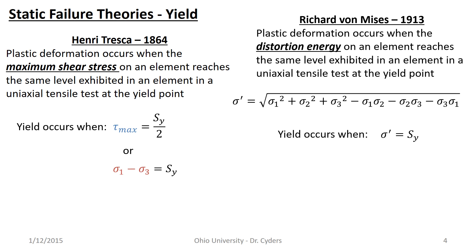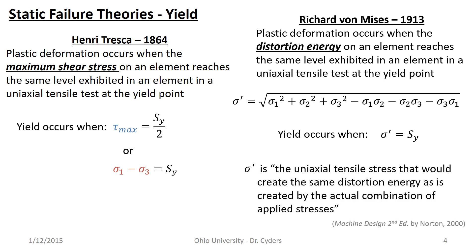And von Mises said that yield occurs when this sigma prime is equal to or greater than the yield point from my tensile test. Again, good for ductile materials, not necessarily brittle materials. Brittle materials have a different failure criterion. Norton expresses it thusly. He says that sigma prime is the uniaxial tensile stress that would create the same distortion energy as is created by the actual combination of applied stresses or the combined stress state that we're talking about.